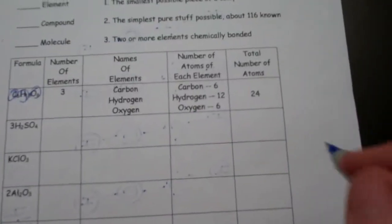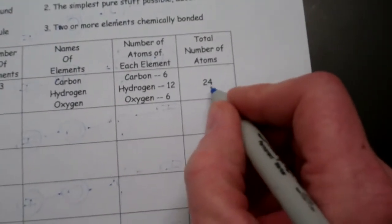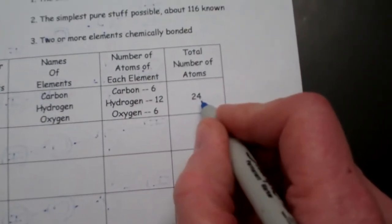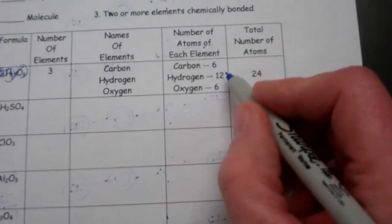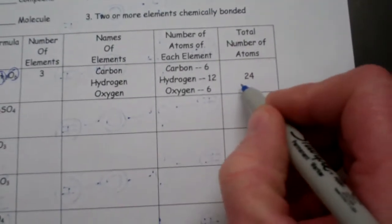All right, let's get back to the matter at hand. So then to figure out the total number of atoms in a molecule, you simply add the numbers up. Six plus 12 plus six is 24.